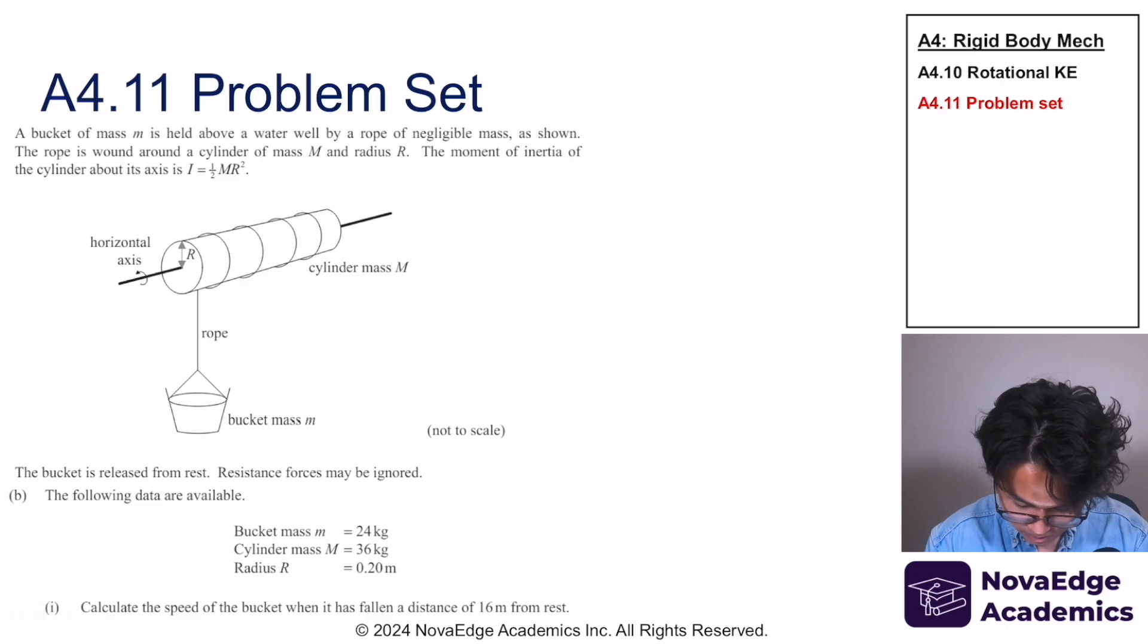Let's continue. Part B, the following data are available. Calculate the speed of the bucket when it has fallen a distance of 16 meters. Well, first, let's recognize that we need the acceleration. Without acceleration, I don't know what the velocity is. So let's first calculate acceleration.